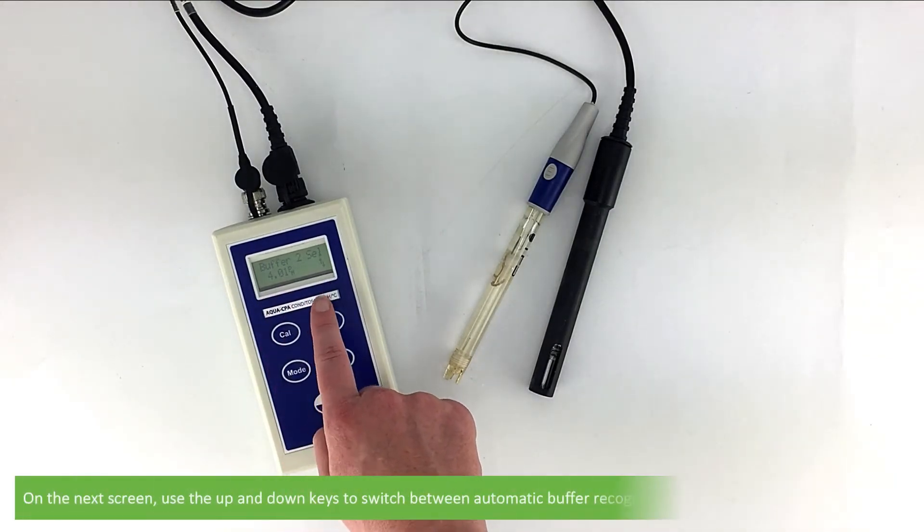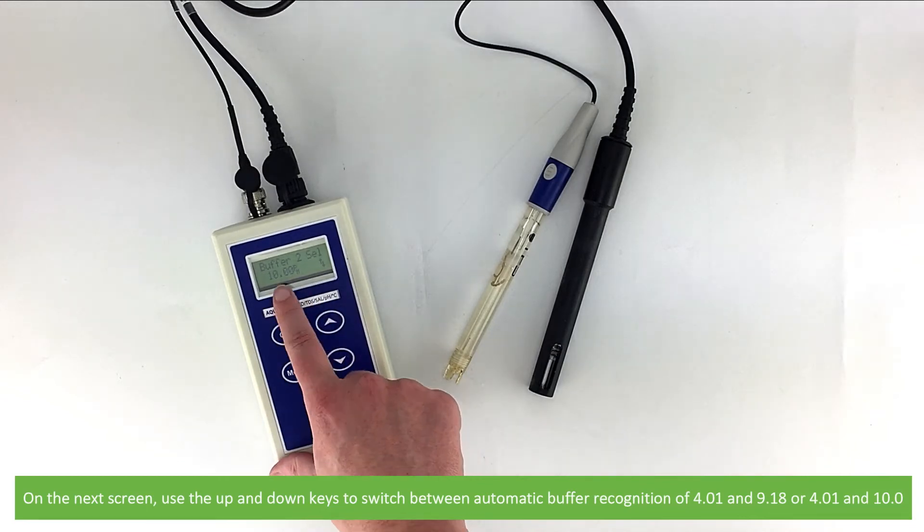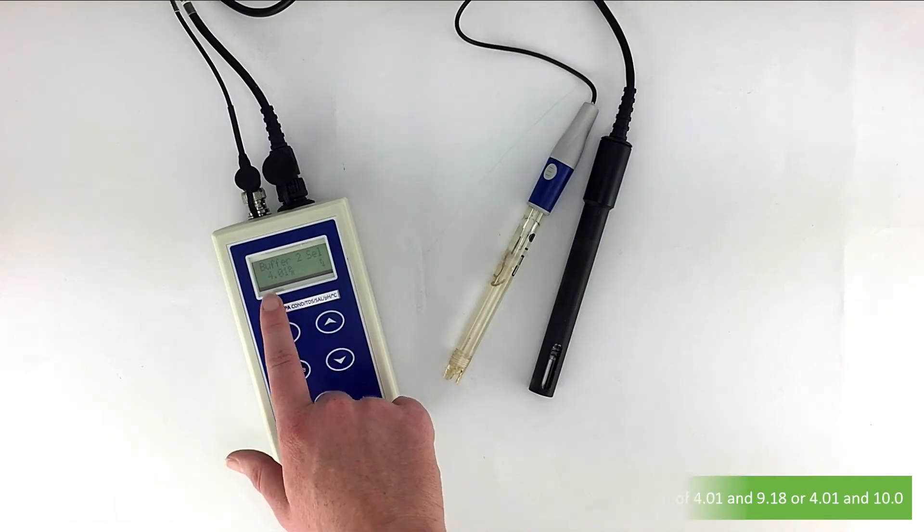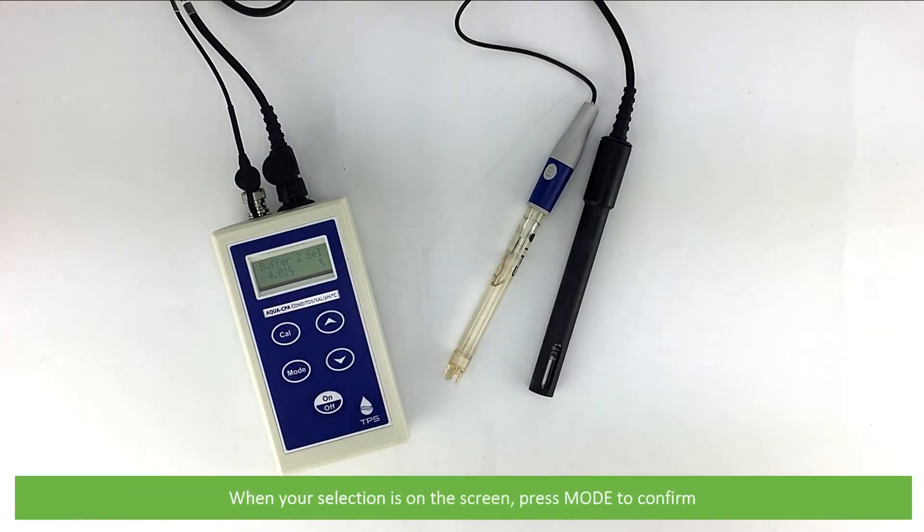On the next screen, use the up and down keys to switch between automatic buffer recognition of pH 4.01 and 9.18 or 4.01 and 10.0. When your selection is on the screen, press mode to confirm.